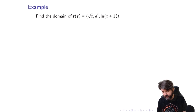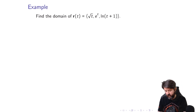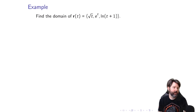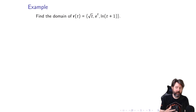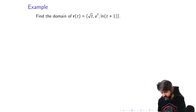Let's do a quick example. Find the domain of R of T, which has components root T, e to the T, and natural log of (T plus one). In this case, the domain is just going to be all values of T at which each one of the components is defined.